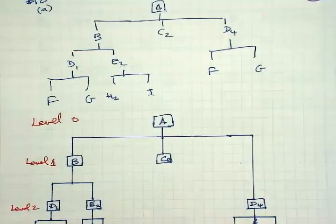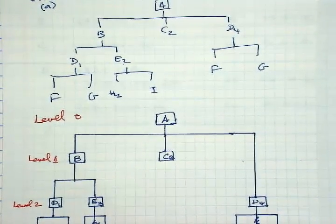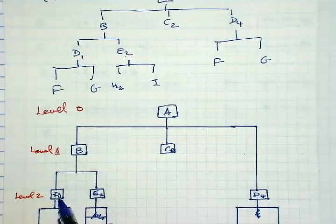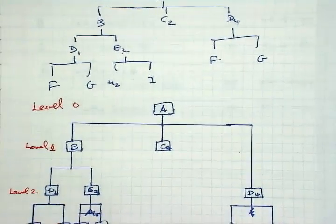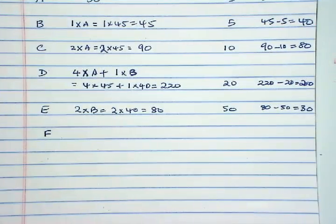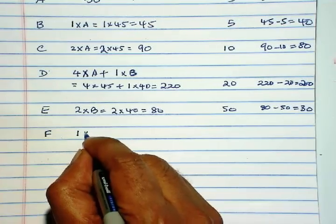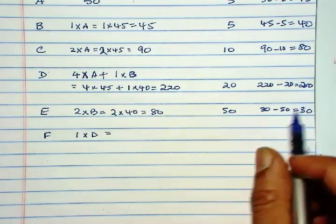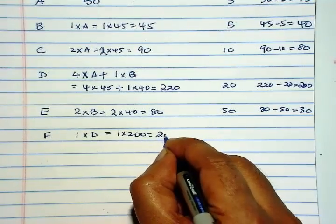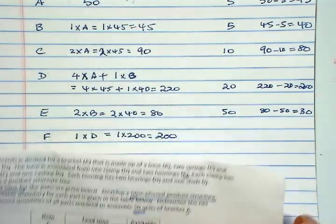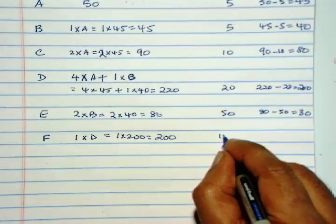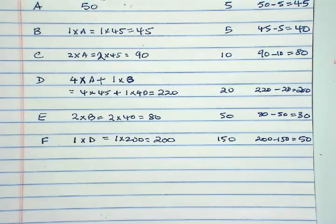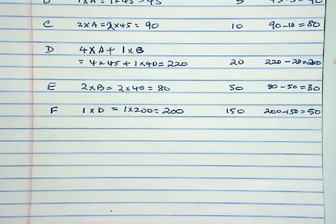In other words, you have to look for not how many times it appears, but how many unique parents are there for a given item. Since D counts as just the same parent, you have to count it only one time. So F, only one unit of F is required for each D. So it is simply 1 times D and that is 200. So 1 times 200 is 200, and we have 150 available. So 200 minus 150 is 50 needed. Net requirement of 50 for F.